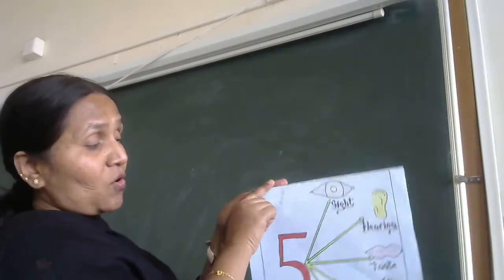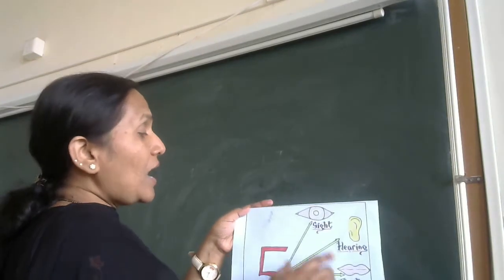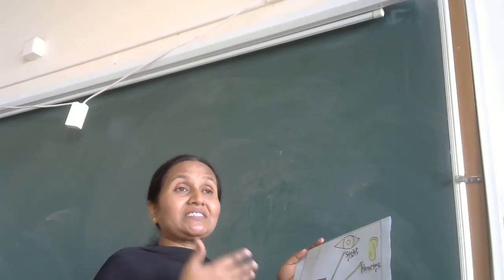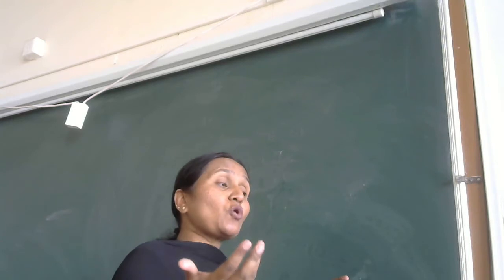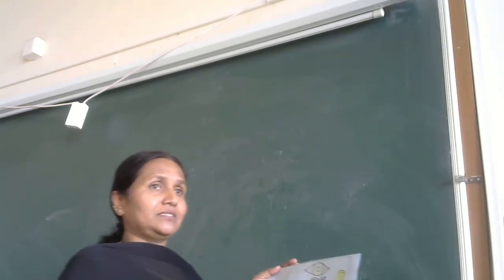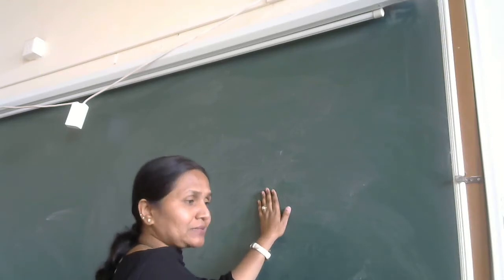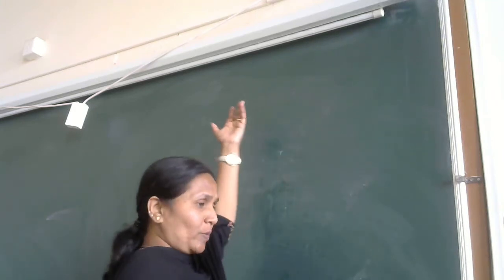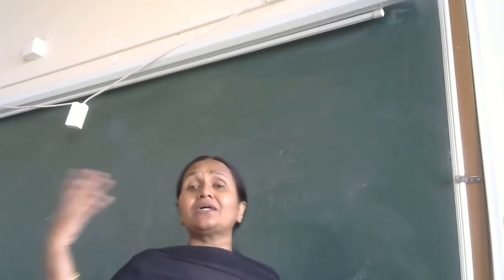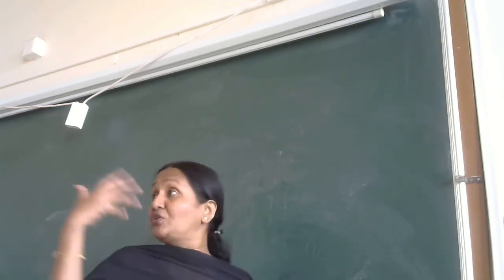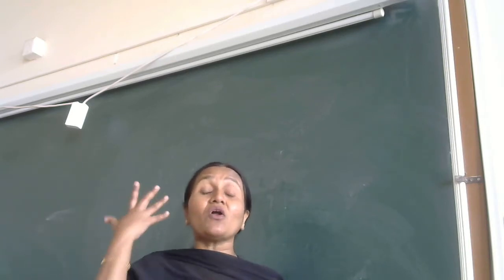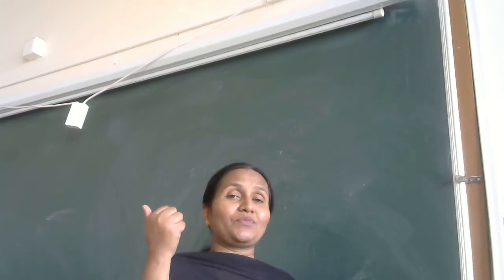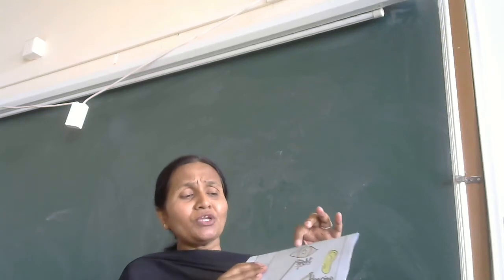Eyes — what do we do with our eyes? We are seeing. We see trees, plants, so many things on the earth. We see colors. We see black, we see white. We see a pan, a table, a chair, green colors. So we know, we feel — the colors come to us through our eyes. That is the sense of sight.